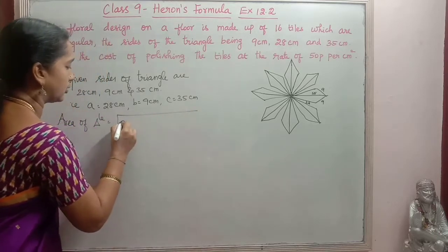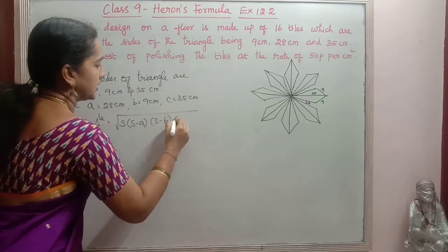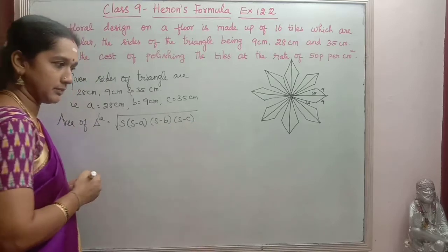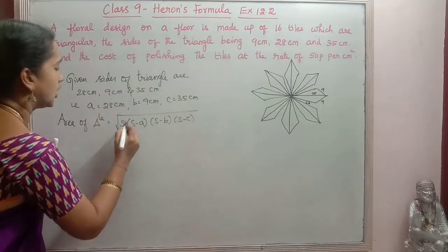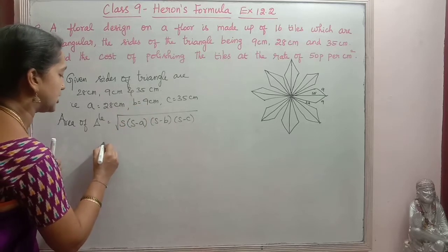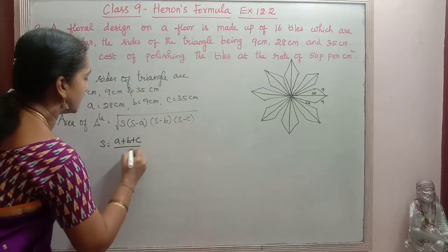So area of triangle is equal to root of s into s minus a, s minus b, s minus c. So this is the formula. So now first we will find the semiperimeter of this. So s is equal to a plus b plus c by 2.